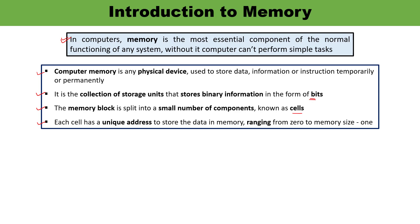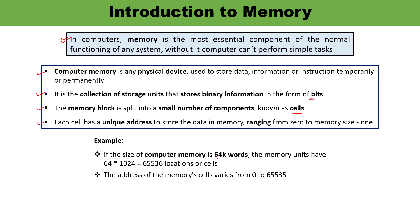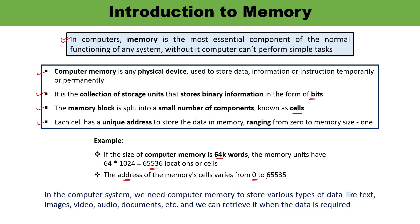For example, suppose the size of computer memory is 64K words. 1K means 1024, so 64K means 64 × 1024, which equals 65,536 locations or cells. The address of the memory varies from 0 to 65,535. This is how you can calculate the address of a memory cell. In computer systems, memory is required to store various types of data — images, video, audio, text, documents — and whenever required, the data can be retrieved.